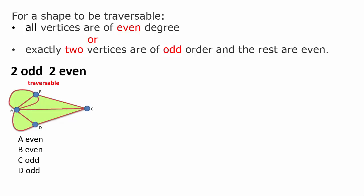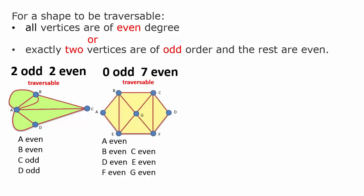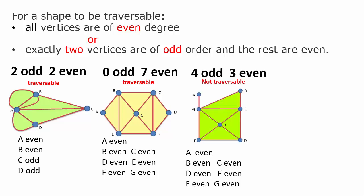Let's verify that for the shapes we looked at. The first one, as you can see there, we said was traversable, and here's the reason: there are two odd vertices and two even, so that satisfies our second condition. The second shape: there are no odd vertices, all are even, so that satisfies the first condition, so that is traversable. The third shape: not traversable, and the reason being that there are four odd vertices, which contradicts the requirement that we cannot have more than two odd vertices.